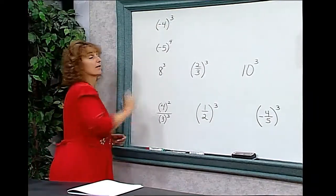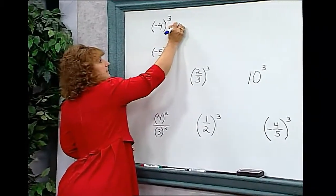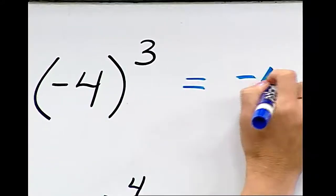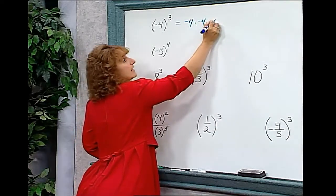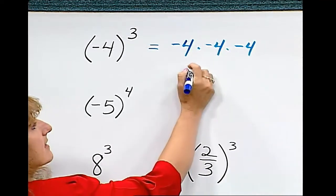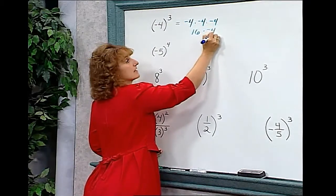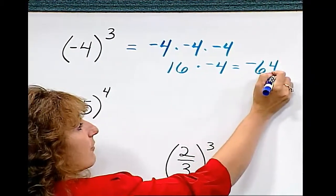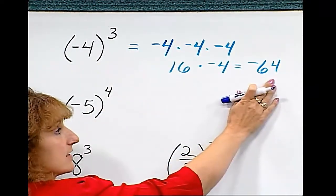In this problem we have negative 4 to the third power. We use the parentheses to show that the negative 4 is to the third, so we have to multiply negative 4 times negative 4 times negative 4. Negative 4 times negative 4 is positive 16. Positive 16 times negative 4 is negative 64. So our answer for negative 4 to the third is negative 64.